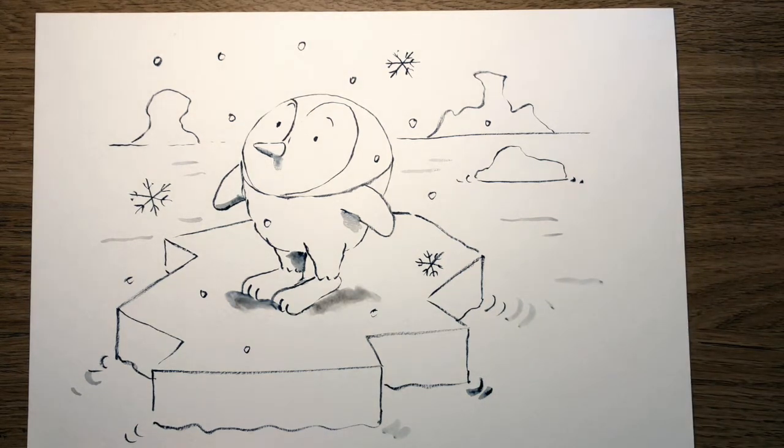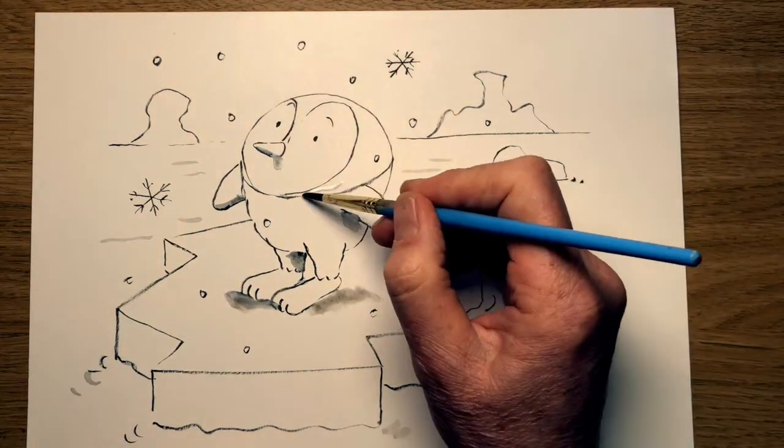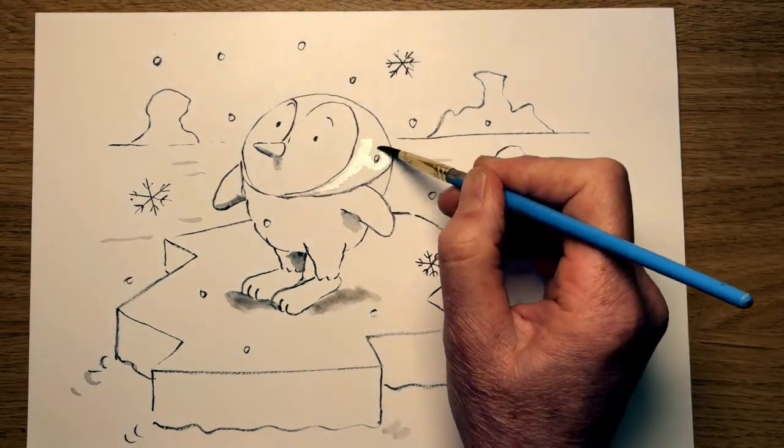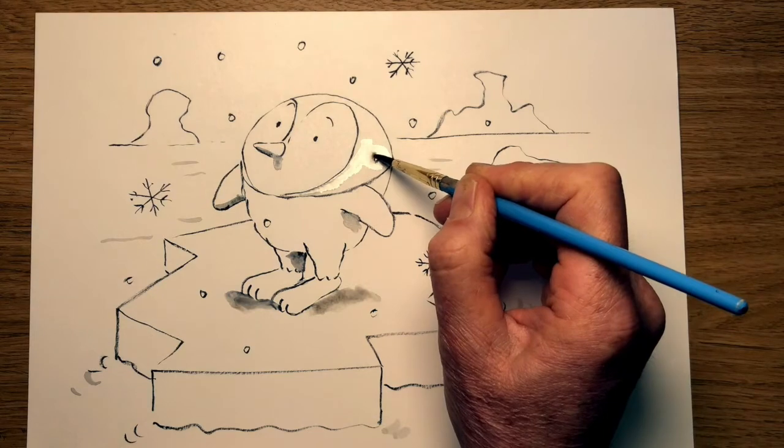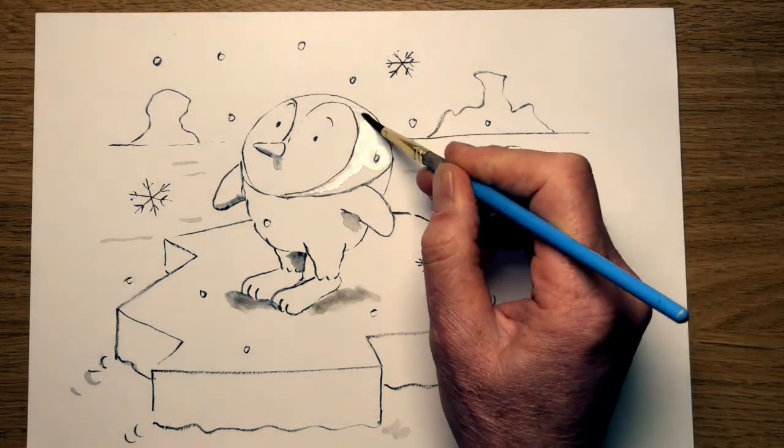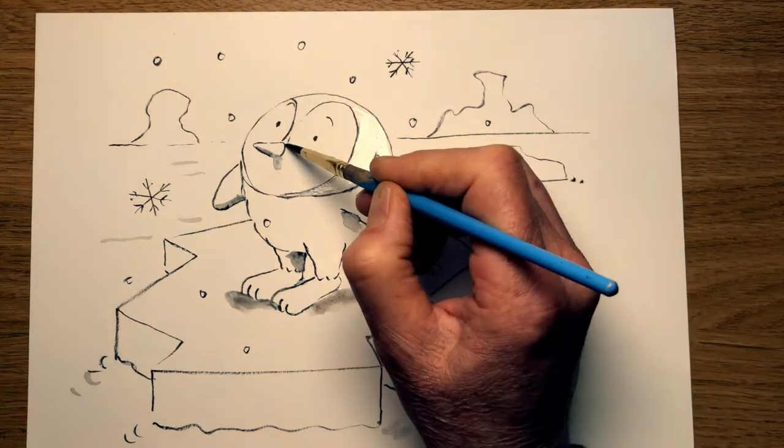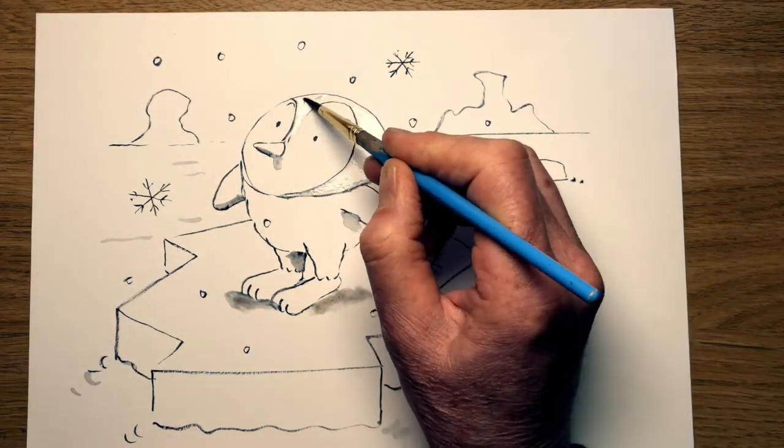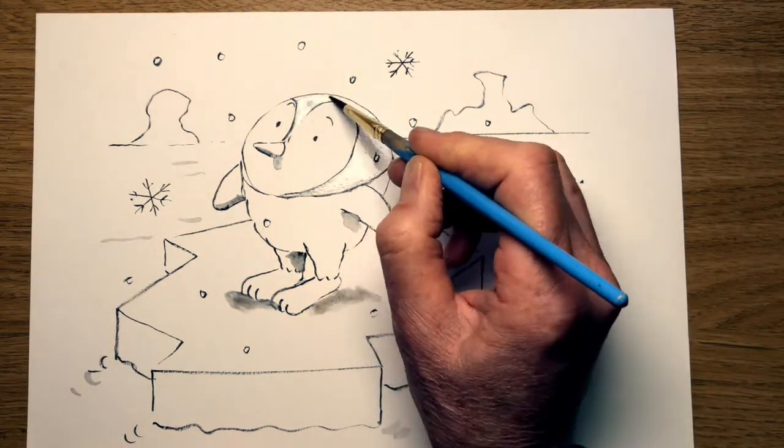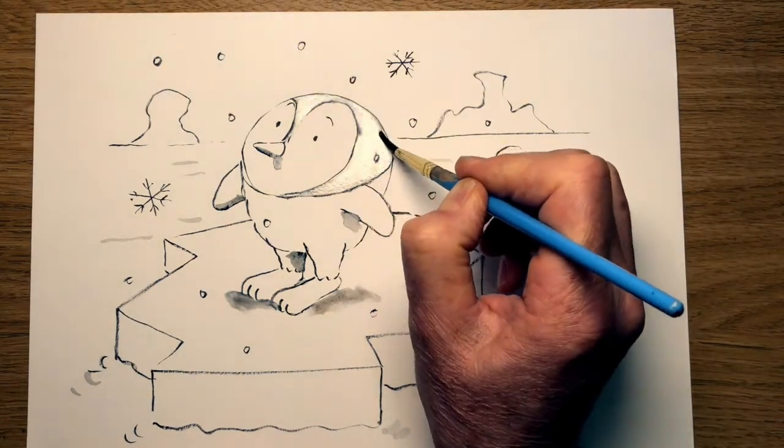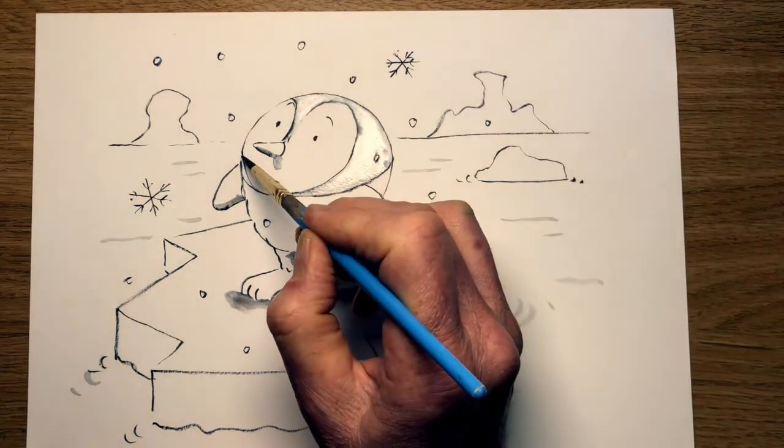Now this particular sort of penguin has got a slightly grey colouring around here. Oh I can't go in there because that's a snowflake. I've got to draw around that one. I'm just wetting this area. So I'm going to make this a slightly grey colour. For this emperor penguin chick.